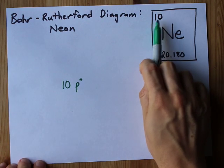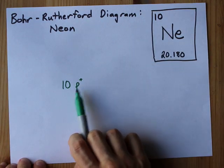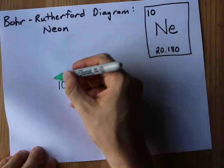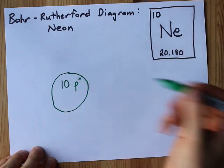The atomic number 10 is the same as the number of protons. This is my symbol for protons and I'm going to put it in the center because this is going to be the nucleus of my atom.